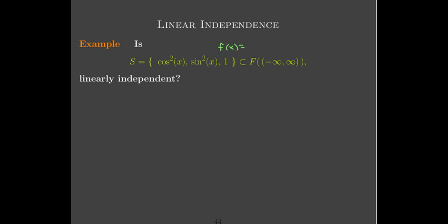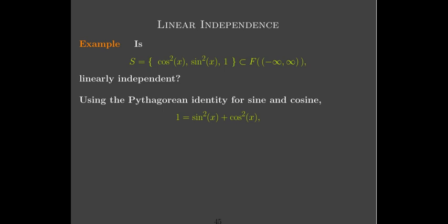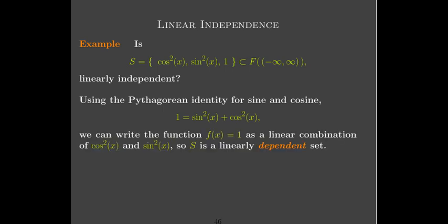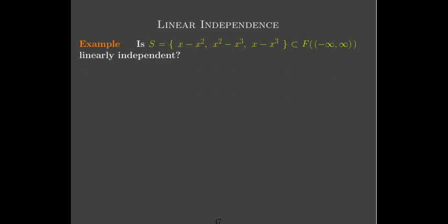Here's another example: the set {1, sin²x, cos²x}, where '1' means the function f(x) = 1 for all x. We use the Pythagorean identity: sin²x + cos²x = 1, which holds for all x. This means f(x) = 1 can be written as a linear combination of the other two functions, so the set is linearly dependent.